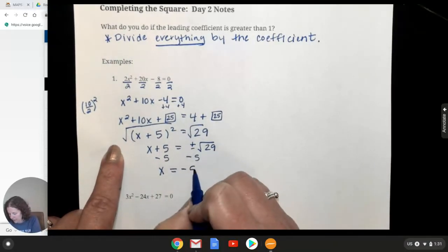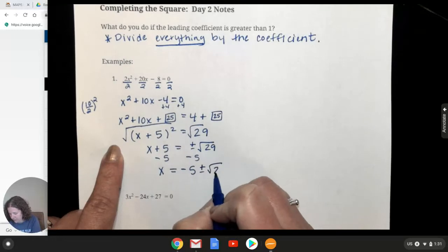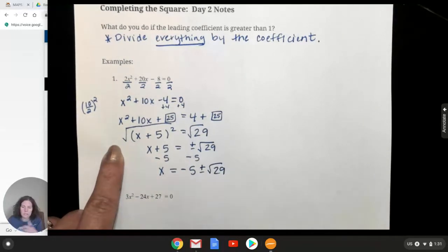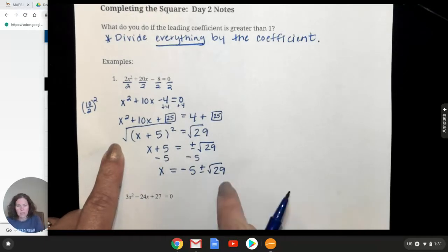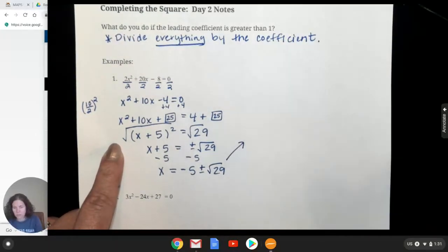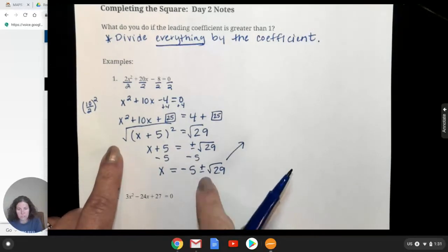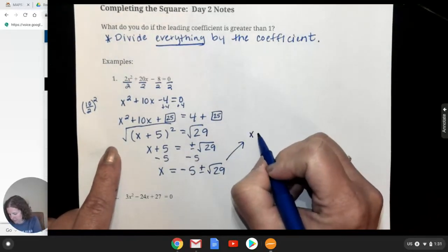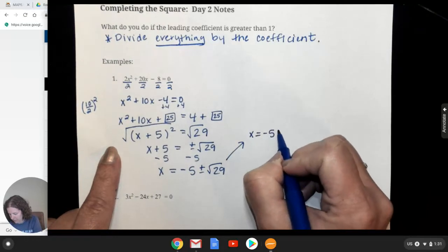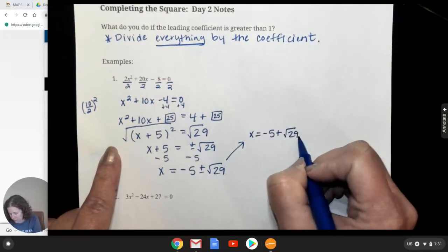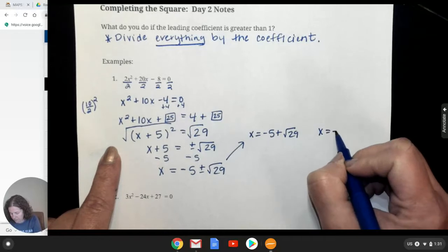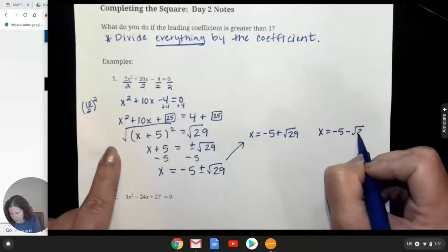So I'm going to have negative 5. I like to write that first. I think it, for a couple of reasons, it helps for what we're doing down the road, especially in advanced algebra. It also maybe helps it so that we set up those two equations to solve a little bit easier. So now we have to do this problem with a plus. So negative 5 plus the square root of 29 and then do it with that minus, negative 5 minus the square root of 29.